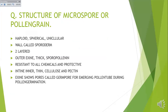Hello students, this is the structure of microspore or pollen grain. In the last video, you have seen the ears of anther and why we take the ears of anther to see the microspore — to see the pollen grains. The pollen grains are not just scattered in the anther; they are actually present in the pollen sac. The pollen sac is called microsporangia and the pollen grains are called microspores.